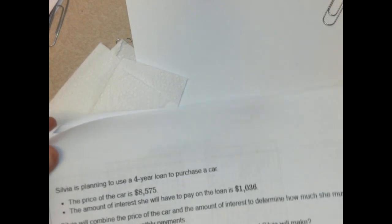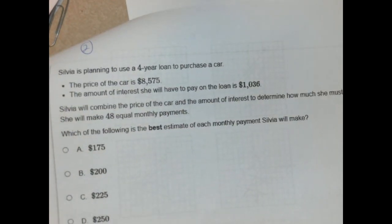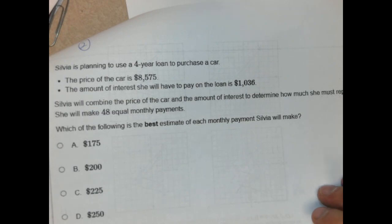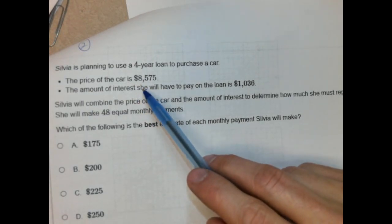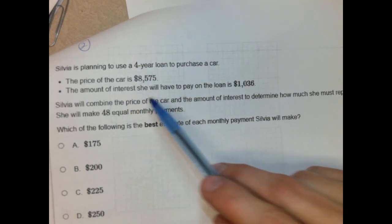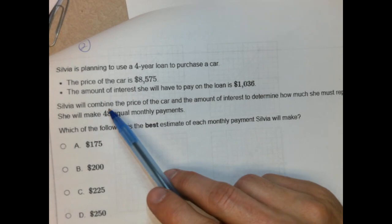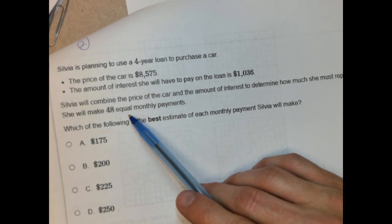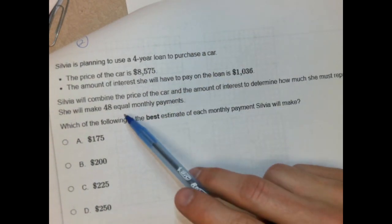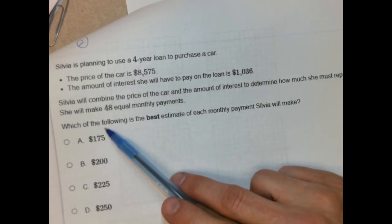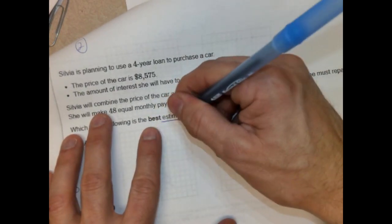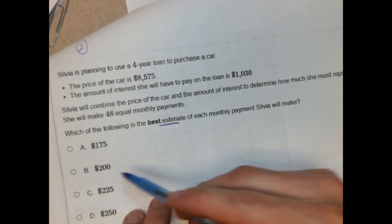Number 2. Sylvia is planning to use a 4-year loan to purchase a car. The price of a car is $8,575. The amount of interest she'll have to pay is $1,036. She will combine the price of the car and the amount of interest to determine how much she must repay. She will make 48 equal monthly payments. So she's combining these together, and she wants to pay it off in 48 months that are equal. Which of the following is the best estimate of each monthly payment Sylvia will make? So key terms here is estimate. So we are going to round here. These are not going to be exact.